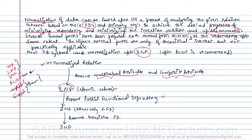From a 1NF relation, if we remove all partial functional dependencies, the relation comes into 2NF, where only full functional dependencies are allowed. From 2NF, if we remove transitive functional dependencies, the relation comes into 3NF. After 3NF we look at BCNF, 4NF, and 5NF, which we will discuss if required.